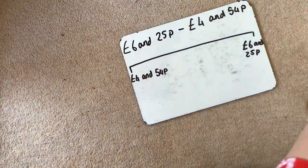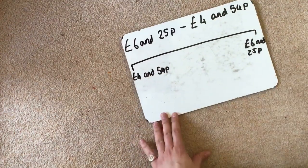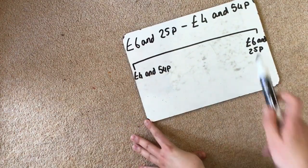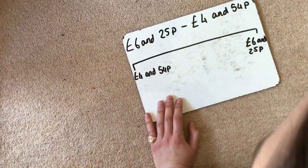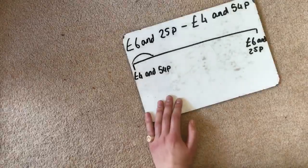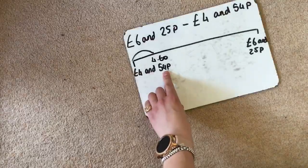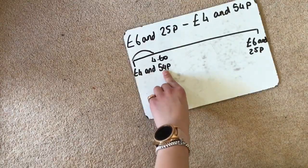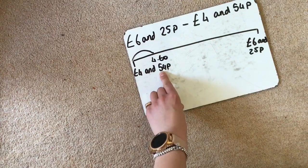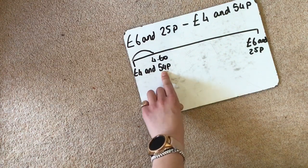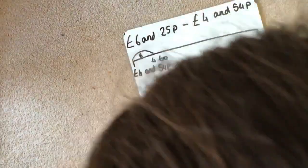So we always jump up, so we're going to start on £4.54 and we're going to jump up to £6.25. So I'm going to think of the first sensible jump. I'm going to jump to £4.60. And that is a jump of 6p. We know that 4p and 6p make 10p. So 54p add 6p takes us to 60p. So that is a jump of 6p.